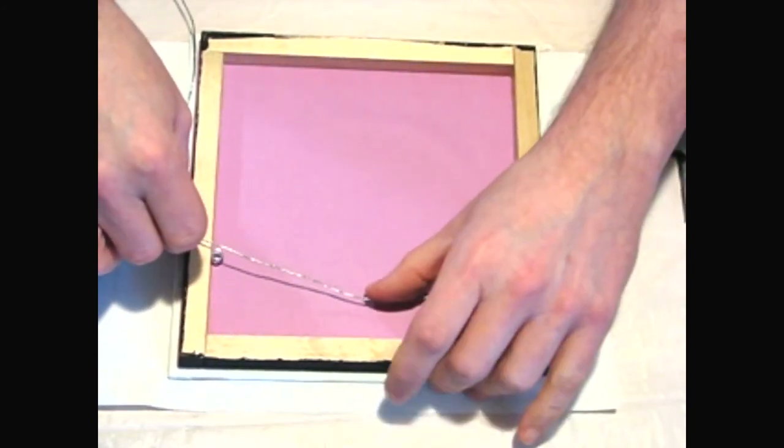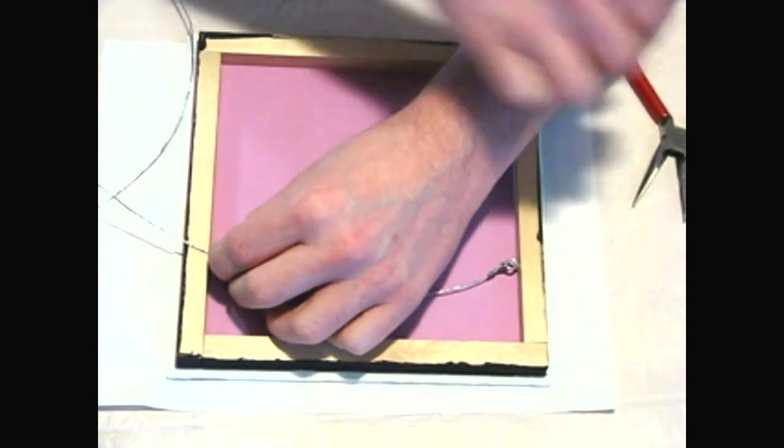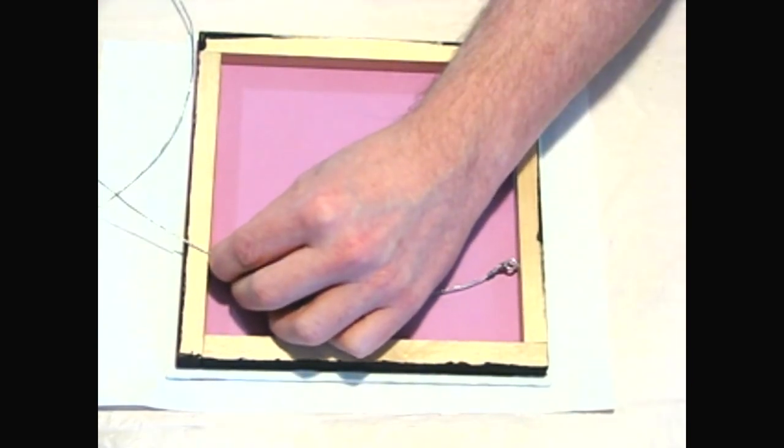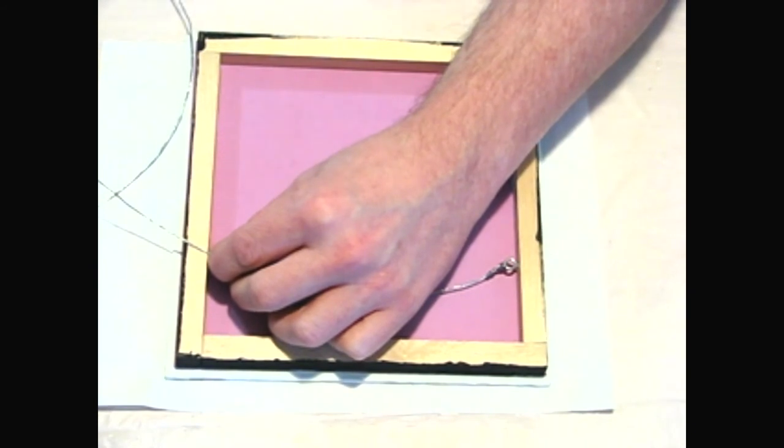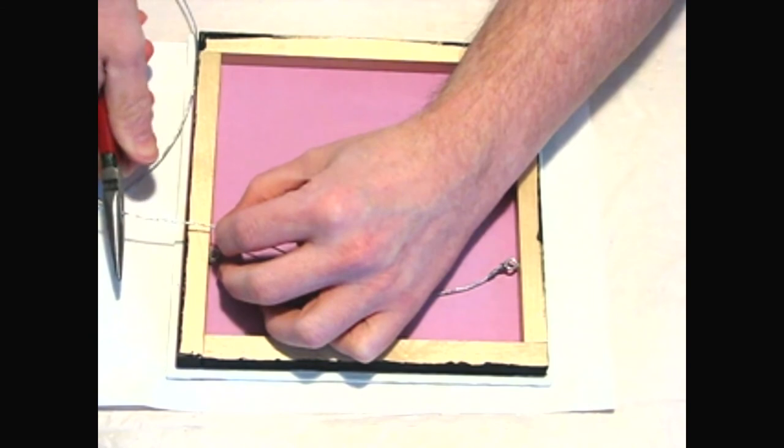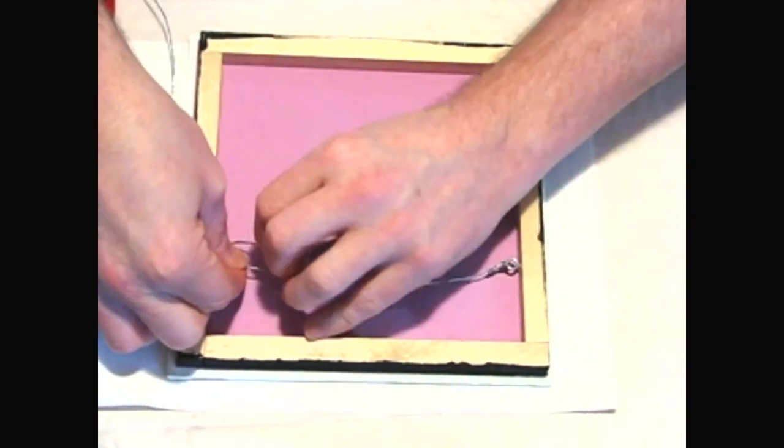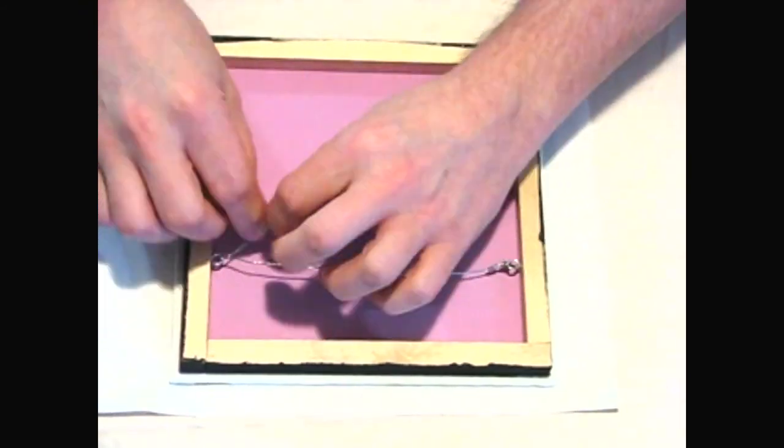Once one side is done, I hold the loose end of the wire near the other eye screw and pull the wire up in the center until it's one half to three quarters of an inch away from the top of the frame. Then I cut the wire between one and a half and two inches past the eye screw. I follow the same steps as I did with the first eye screw to attach the wire to this one.